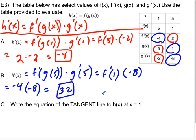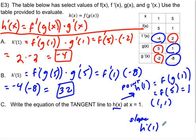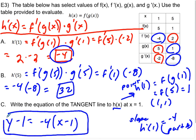For the tangent line to h at x equals 1, I need a point and a slope. h of 1 equals f of g of 1 equals f of 5 equals 1, so the point is 1 comma 1. The slope is h prime of 1, which we found in part a to be negative 4. So the tangent line equation is y minus 1 equals negative 4 times x minus 1.